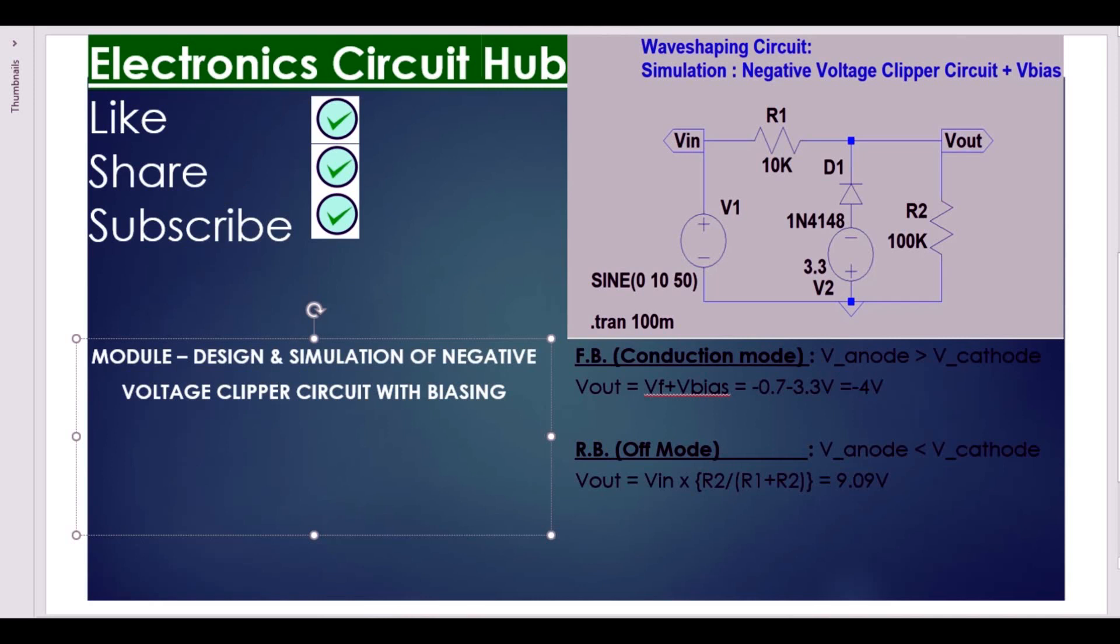For negative half cycle, this diode conducts and it becomes forward biased, and your output voltage will be V_out will be V_forward voltage plus V_bias voltage, that is equals to minus 0.7 minus 0.3, which is equals to minus 4 volt.